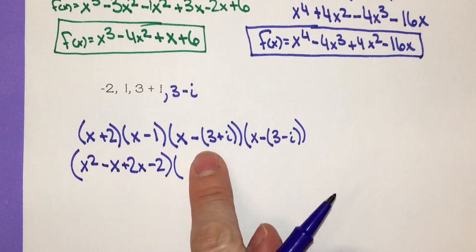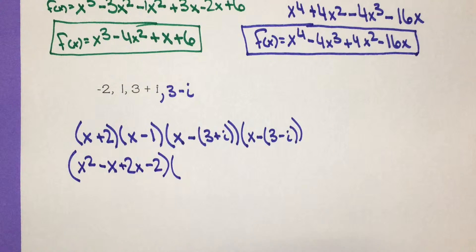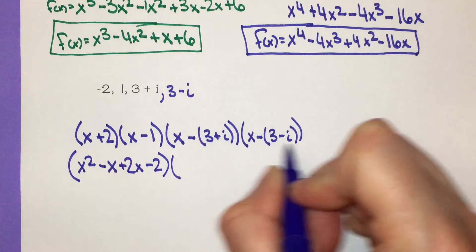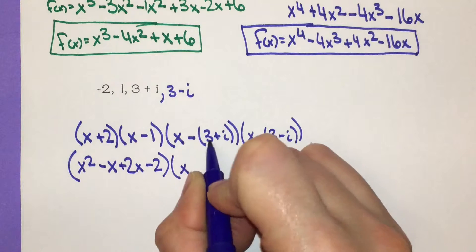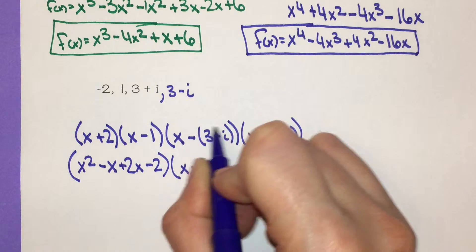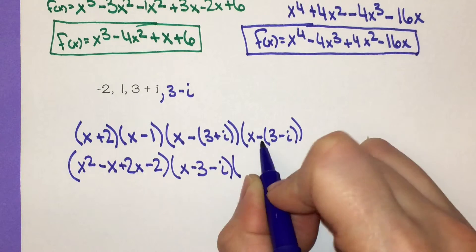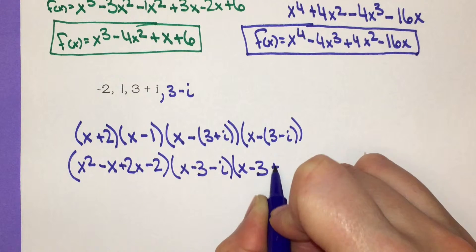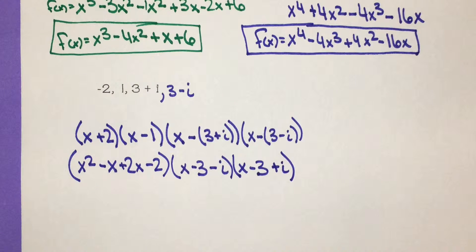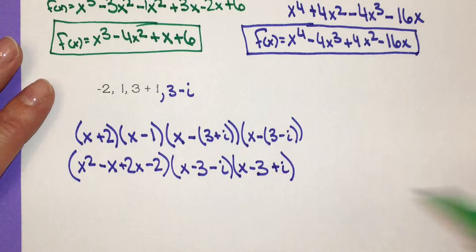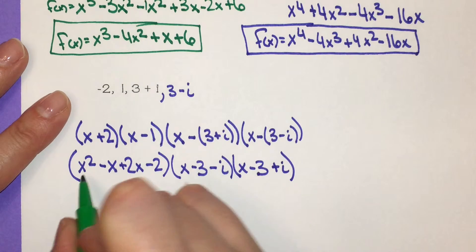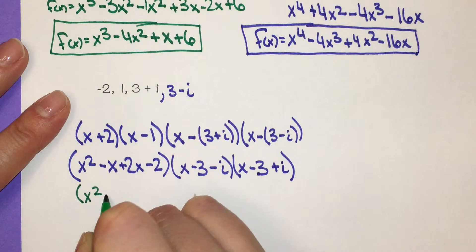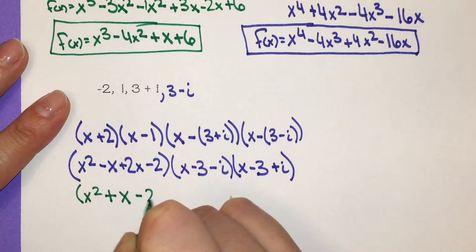I'll also simplify the conjugate factors. There's a negative outside the parentheses, so I distribute: negative times 3 is negative 3, negative times i is negative i, and for the other factor negative times negative i is positive i. Combining like terms for the first two factors: x squared, negative x plus 2x is positive x, minus 2.